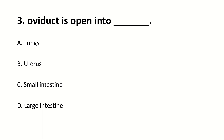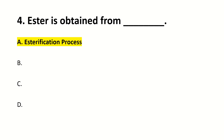Oviduct is open into dash — right answer is B, uterus. Ester is obtained from — right answer is the esterification process.